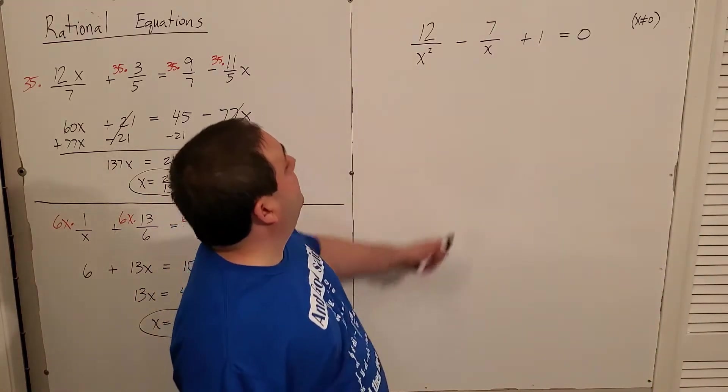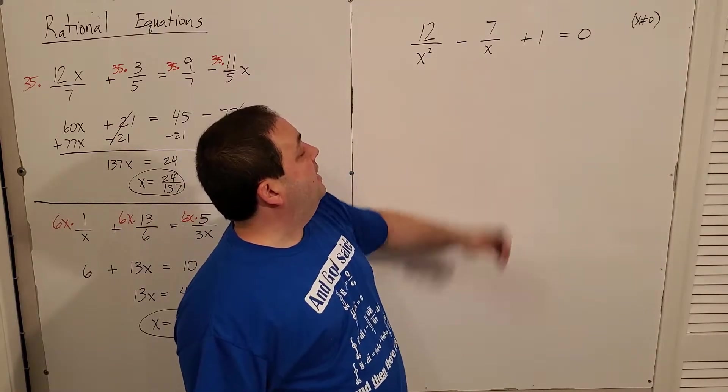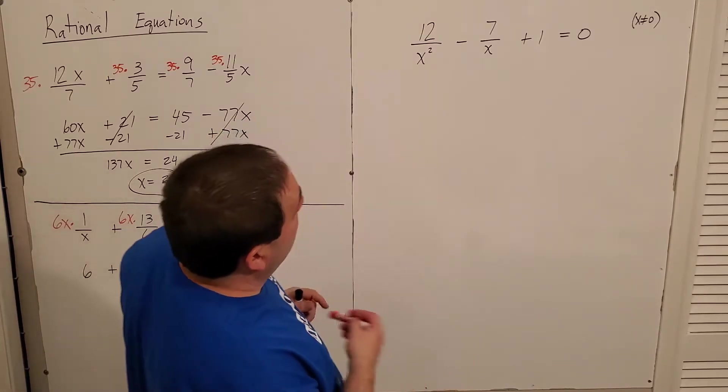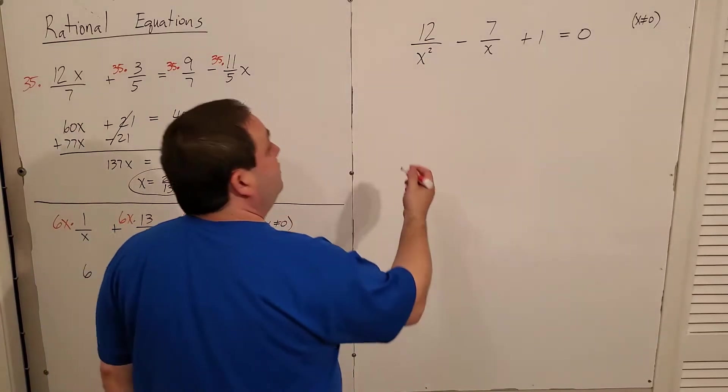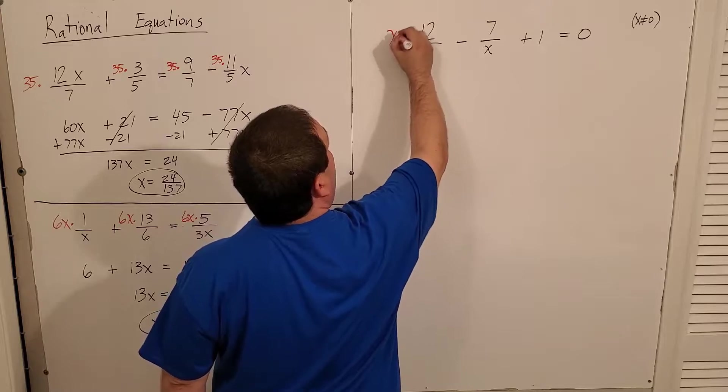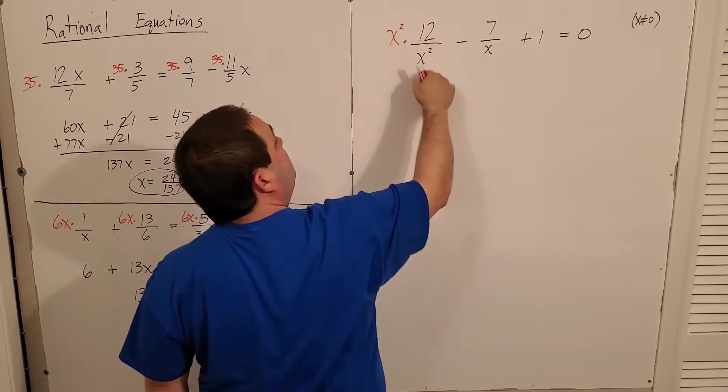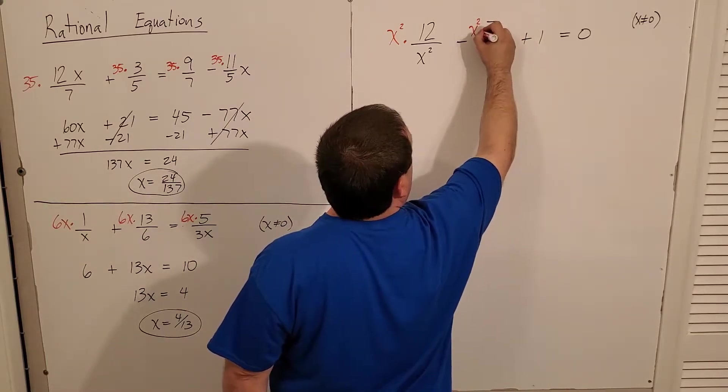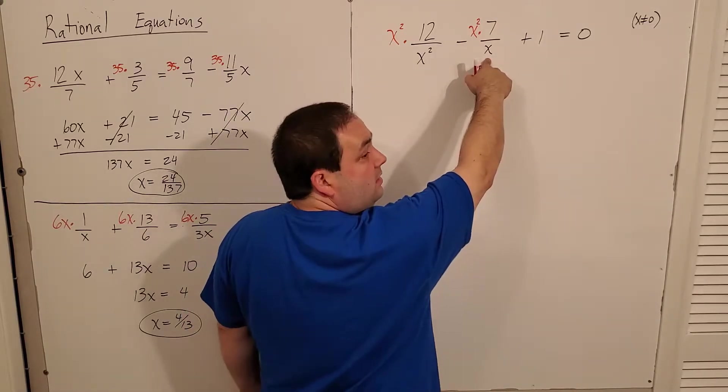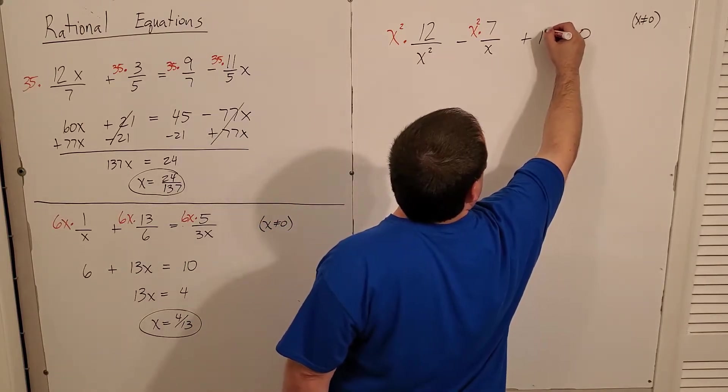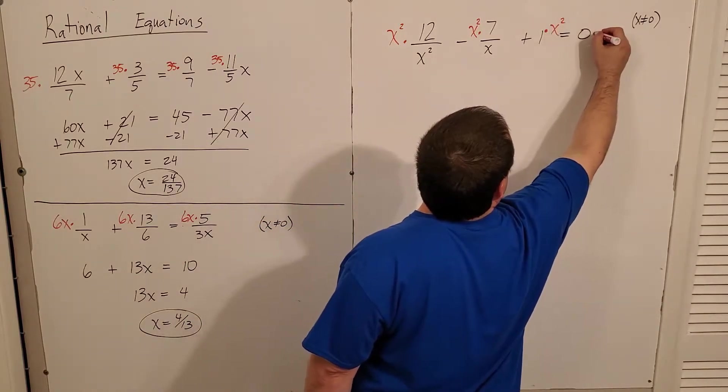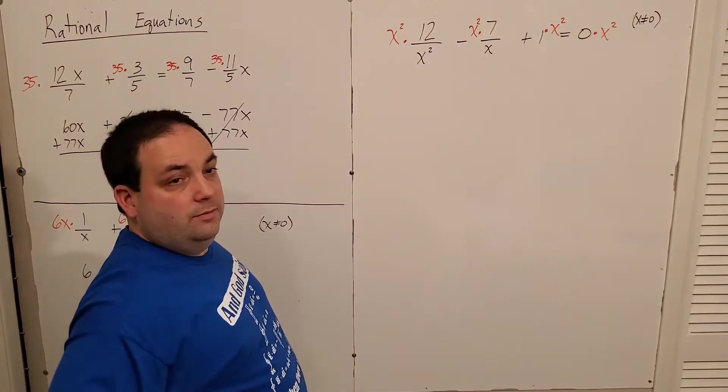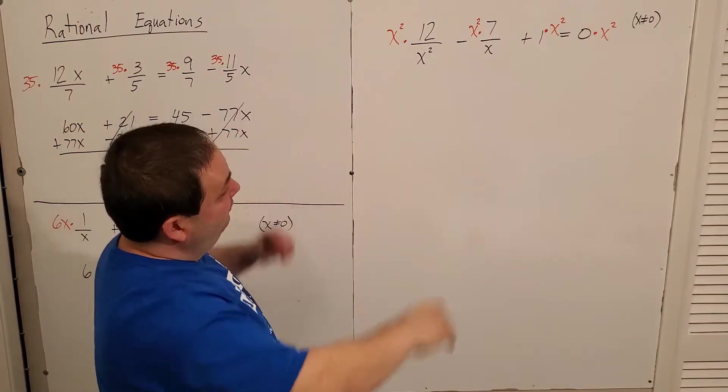So then I need something that can take care of an x squared and an x. Now, those are the only two denominators I have to worry about there. All right. Well, then that means I can just multiply by x squared because x squared over x squared will take care of itself. And also if I multiply x squared over x, it will also get rid of this denominator. And then I just still have to multiply x squared here and here. Just normal multiplication, right? Golden rule. I have to multiply it equally everywhere.